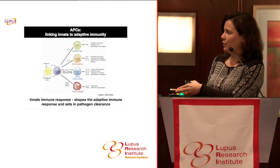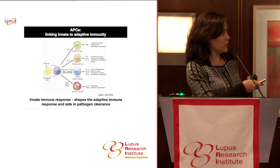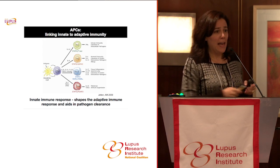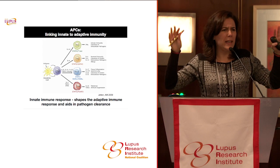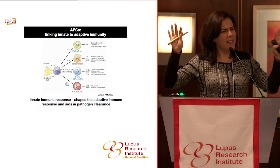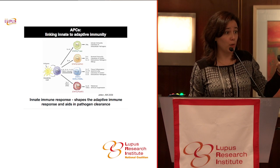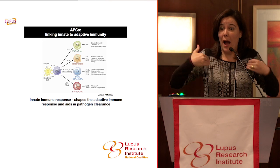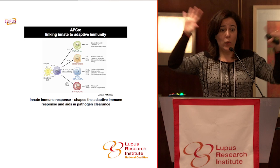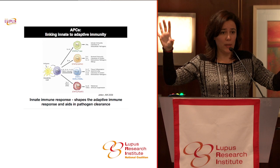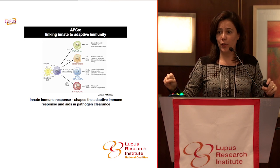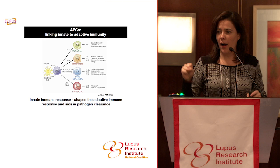These cells have these proteins, these receptors shown here, that allow them to recognize things that are very different in the microbes — very different from our own selves. When they are exposed to that through these receptors, they can turn this car on.